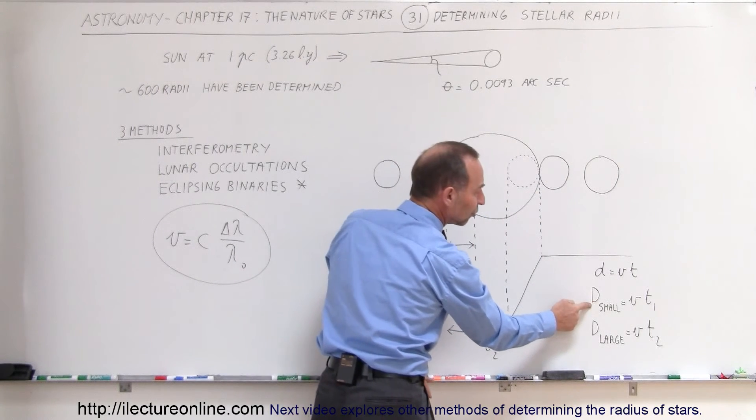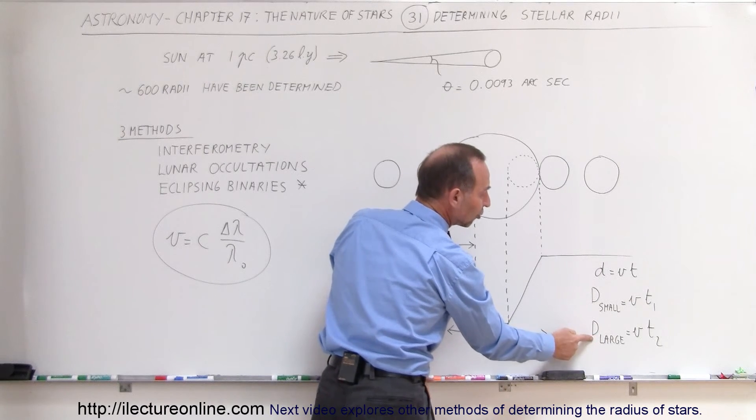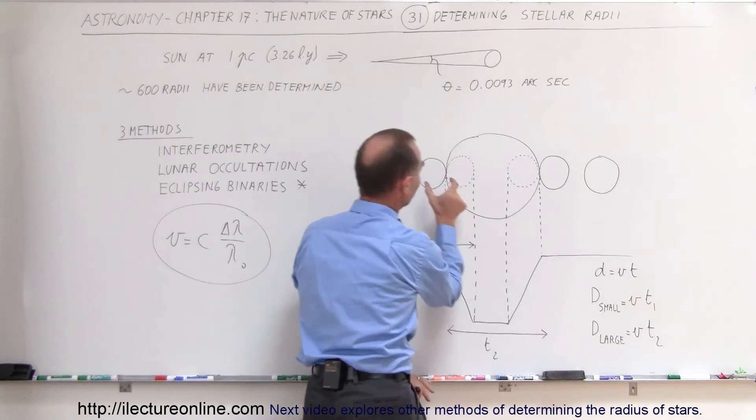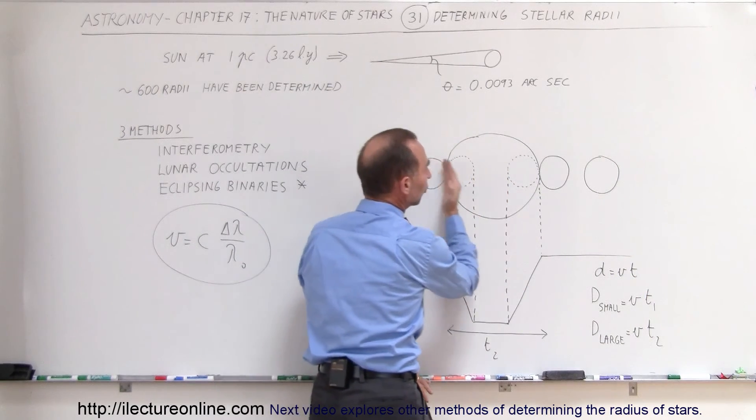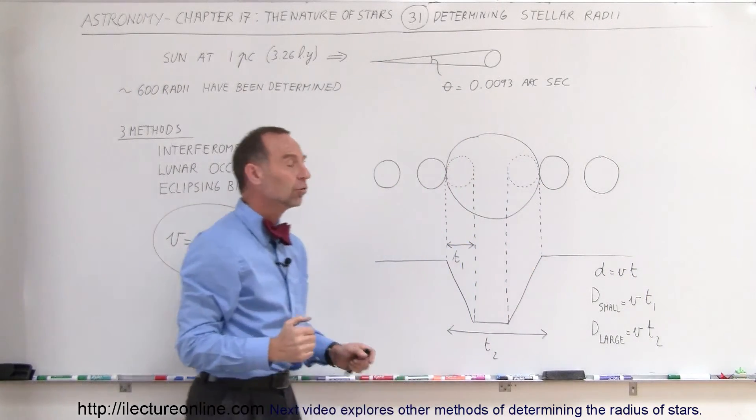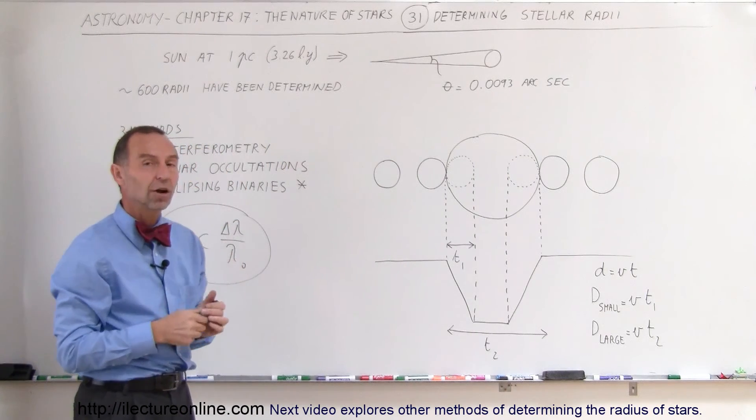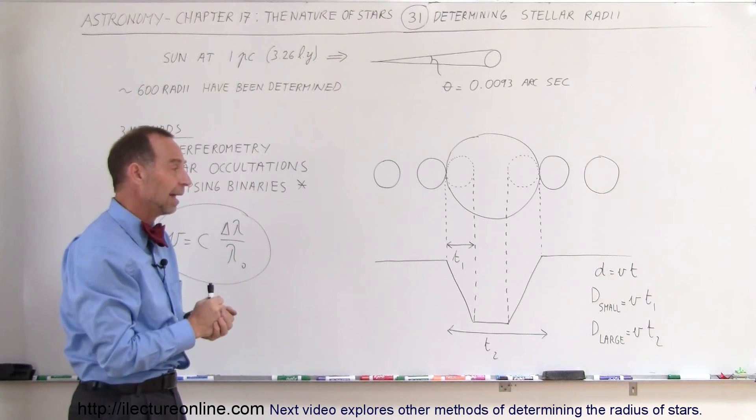From those two time measurements, we can figure out the diameter of the small star and the diameter of the large star by simply multiplying the velocity, which we determine this way, times the time that it took for the small star to disappear or for the total time of the occultation. In that way we can actually measure indirectly the diameter of stars, and we've done so for hundreds and hundreds of stars like that.